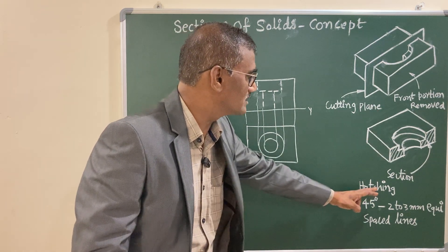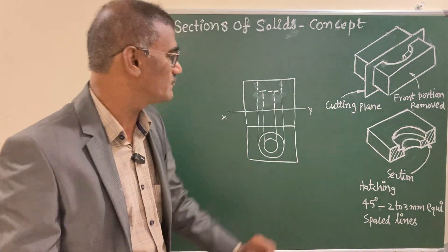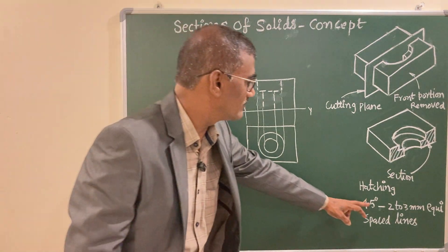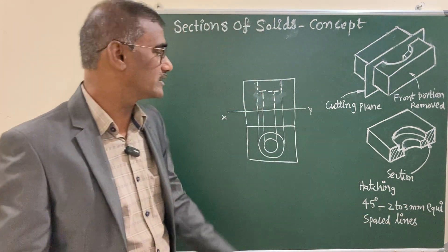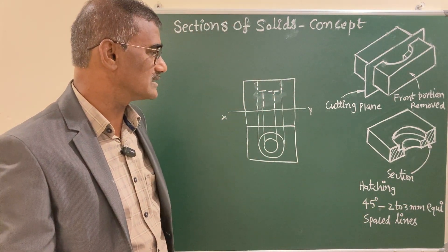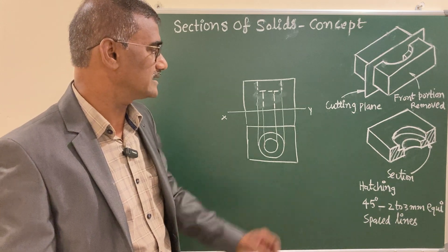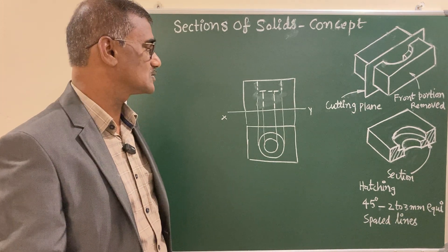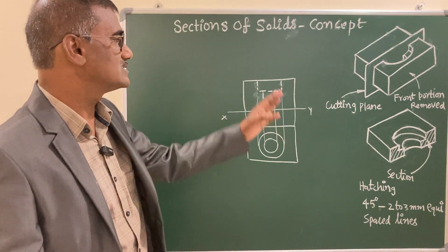The standard for hatching is you have to draw 45-degree lines with equispaced lines, giving a gap of 2 to 3 mm. You have to maintain these equispaced lines with a 2 to 3 mm gap at 45 degrees.